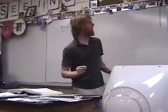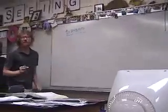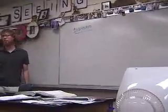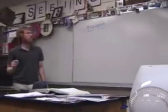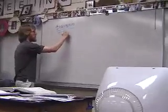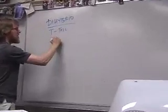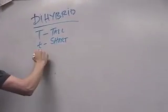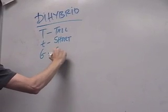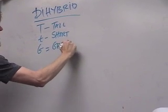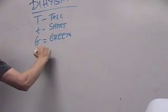So what we're going to be crossing is tall plants and green and yellow plants. So I'm going to use big T for tall, little t for short, big G for green peapods, and little g for yellow.